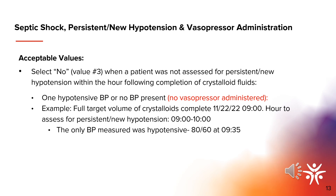In this example, select value three. The patient was not assessed for persistent or new hypotension when the only blood pressure measured within the hour following fluid completion is hypotensive. The only blood pressure measured was 80 over 60 at 9:35. Note that no vasopressor was administered. This would be an opportunity for improvement based on the fact that this patient was not assessed for new or persistent hypotension.